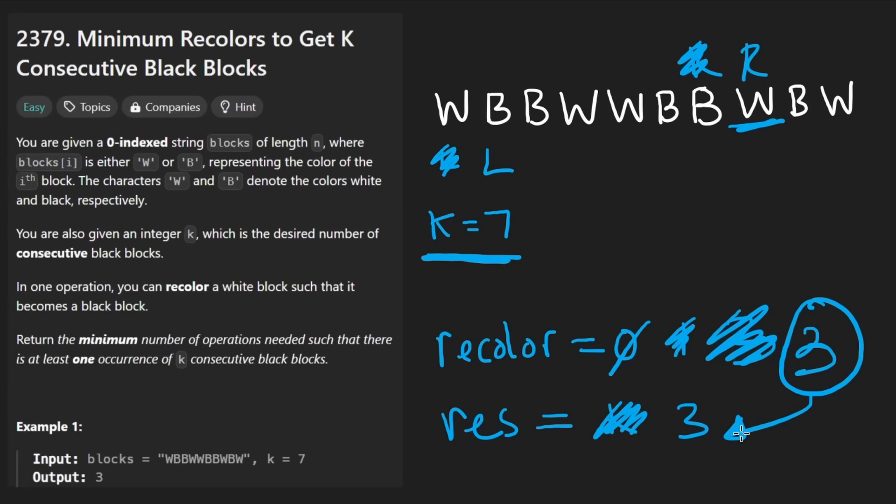And the result is exactly equal to three as well, so nothing to do there. Once again we will take the left pointer, shift it. It was black, so no need to update this. We will take the right pointer, shift it. Nothing really changed, so nothing's going to be updated. And once again, left pointer is here, now right pointer is going to be over here.